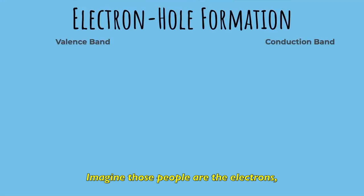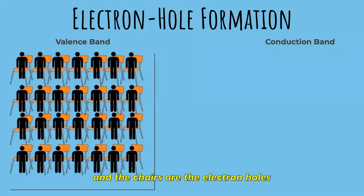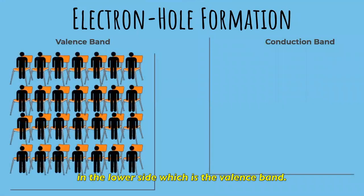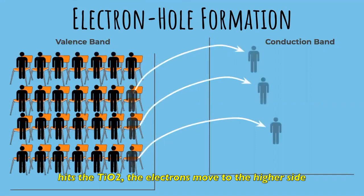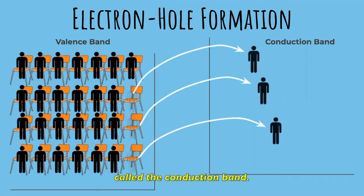Imagine those people are the electrons and the chairs are the electron holes in the lower side which is the valence band. When the sunlight that contains a lot of energy hits the TiO2, the electrons move to the higher side called conduction band.